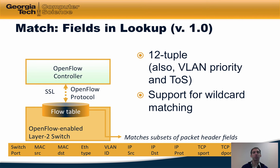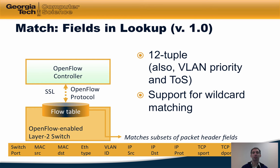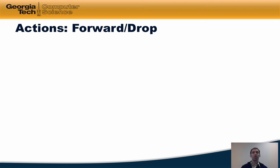The OpenFlow 1.0 specification defines a 12-tuple — 12 different fields in a packet header on which a flow table entry could match. Fields include the incoming switch port, the source and destination MAC address, the Ethernet type, the VLAN ID, the source and destination IP address, the protocol type (for example, whether the packet is TCP or UDP), and if it's a TCP packet, the source and destination port numbers.